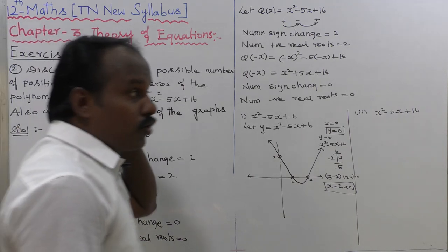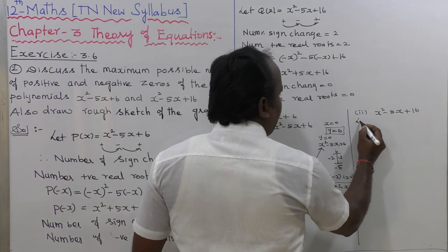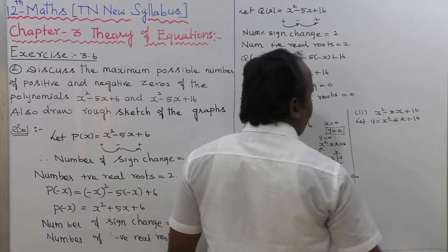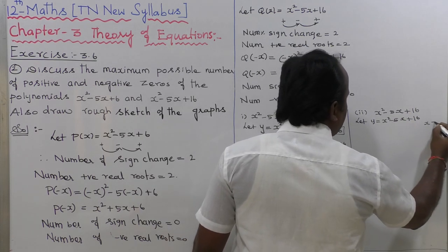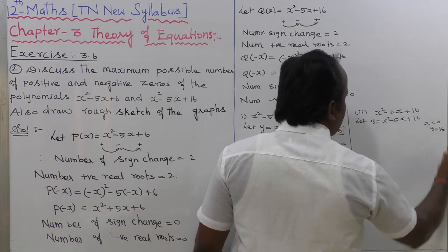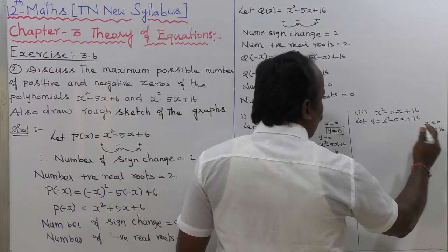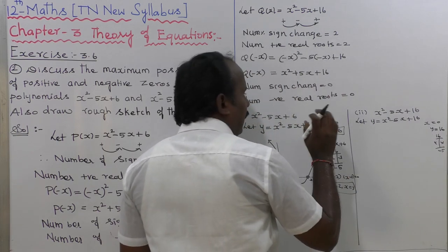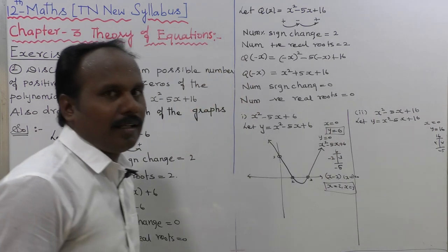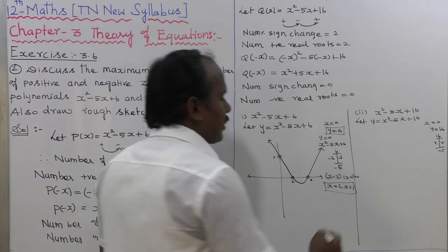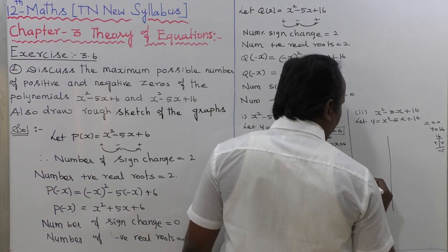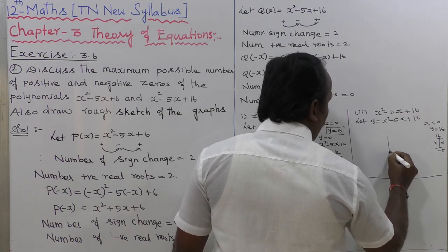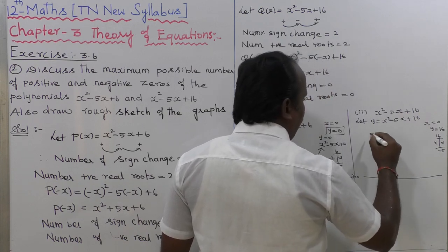For the second equation, y equal to x squared minus 5x plus 16: when x equal to 0, y equal to 16. If y equal to 0, the discriminant is negative so there are no real x-intercepts. The graph is an upward-opening parabola that crosses the y-axis at y equal to 16 and does not touch the x-axis.